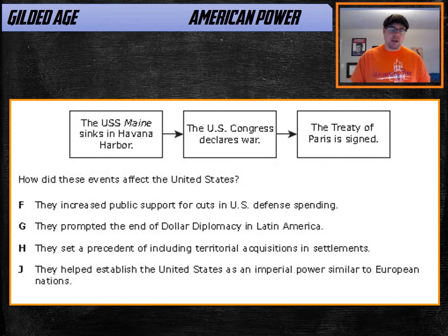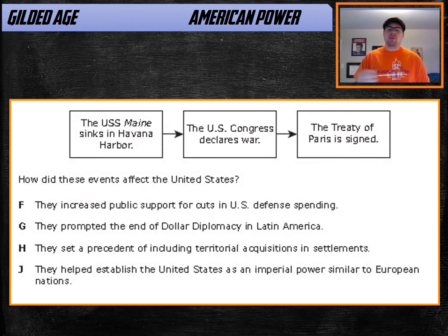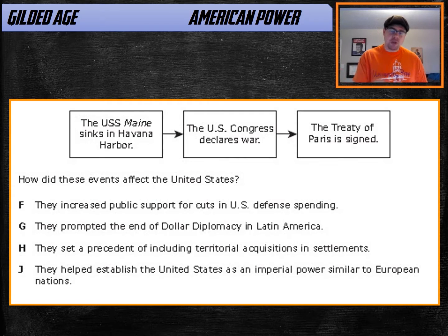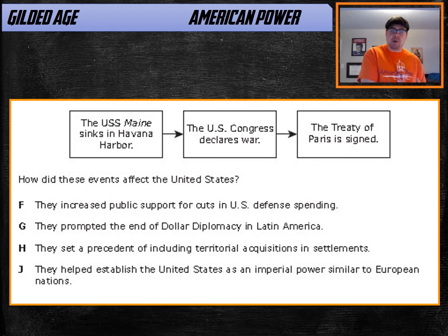The diagram is talking about the USS Maine being sunk, Congress declaring war, then the Treaty of Paris being signed. It never mentions the words 'Spanish-American War,' but you should be able to recognize the details. Even above that, you should be able to recognize the answer — and that's why looking at these focuses helps. Test after test after test, America becomes an imperial power.